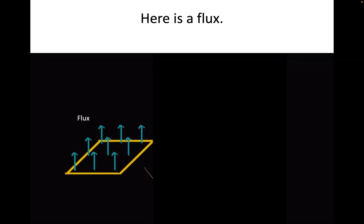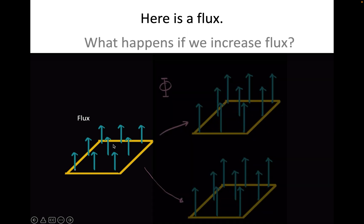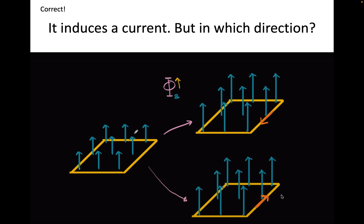Starting from the beginning, if you have a flux — remember, the flux is the number of lines passing through an area — and if I increase the flux, what will happen? Increasing the flux will induce a current. But we need to know whether it's going to go up this way or come down this way — whether it's going to be clockwise or anticlockwise.